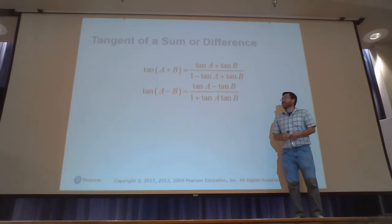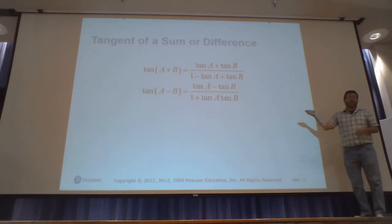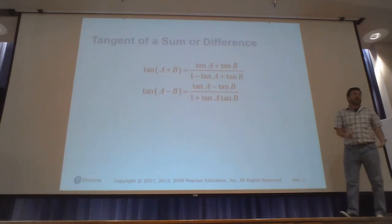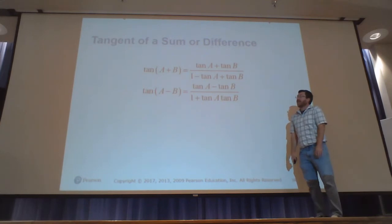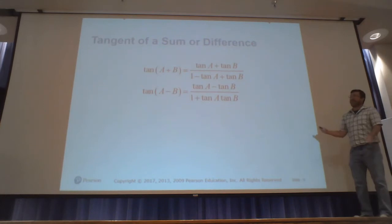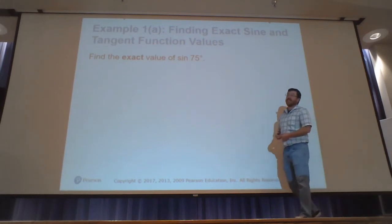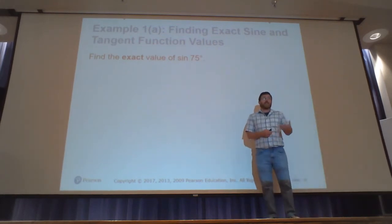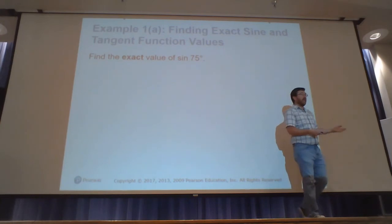If we don't want to remember the tangent identities, we can always use the sine and cosine sum and difference identities to find the same results — it's just a longer process. Now let's apply these. To find the exact value of sine of 75 degrees, I need to use special trig angles that give exact values. So I rewrite sine of 75° as sine of 45° plus 30°.